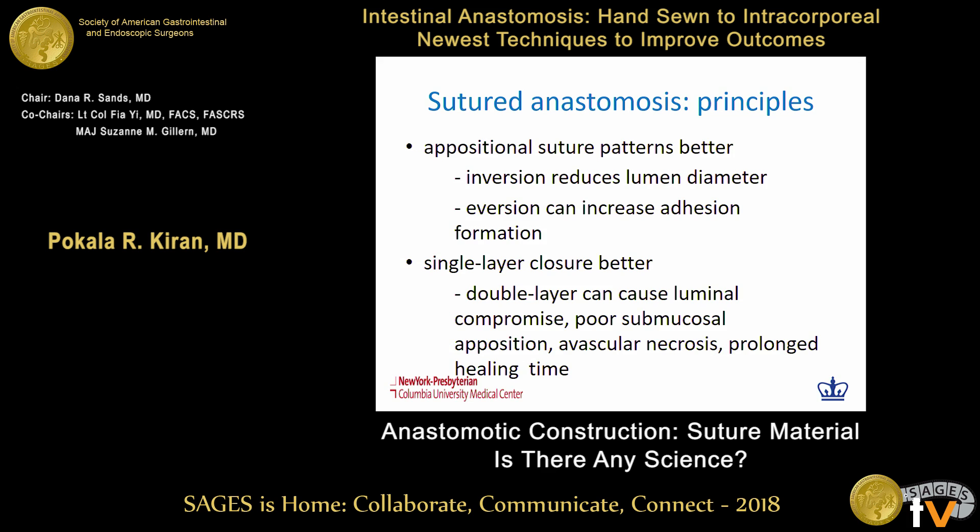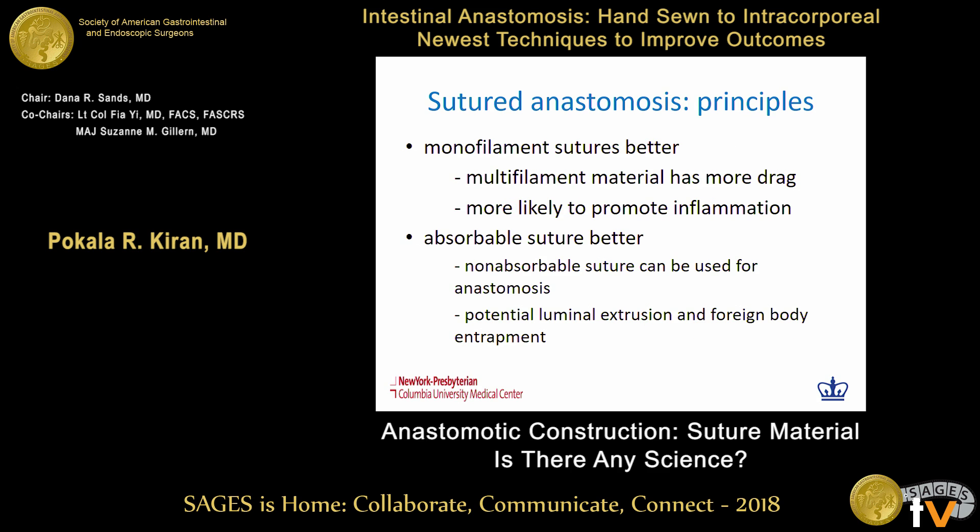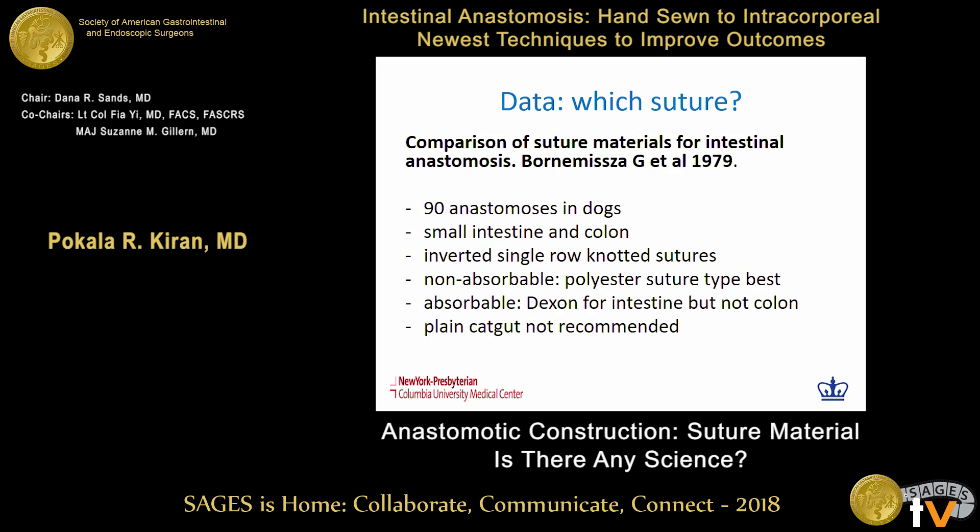In general, appositional suture patterns are better. Inversion reduces the lumen diameter, and eversion can predispose to adhesion formation. A single-layer closure is usually better since a double-layer can cause luminal compromise, problems with blood supply, and prolonged healing time. Based on the amount of inflammation caused, monofilament sutures are probably better, and we do not want to use permanent sutures because of the risk of foreign body formation.